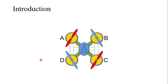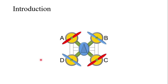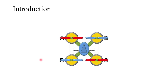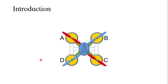Looking at the animation, two diagonally opposite pairs of propellers rotate in one direction while the other pair rotates in the opposite direction. That is, propellers A and C rotate in the clockwise direction while propellers B and D rotate in the anti-clockwise direction. If four propellers rotate in the same direction, then due to their rotation a torque is produced.